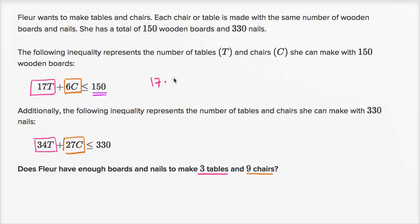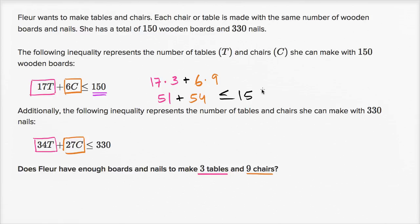She's going to use 17 times three boards for the tables, and then six times the number of chairs — so six times nine. Six boards per chair times nine chairs. So this is 17×3 = 51, plus 6×9 = 54. And 51 plus 54 is 105. Is that less than or equal to 150? Yes — so that checks out. She has enough boards.